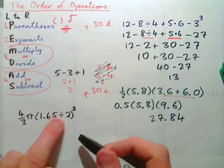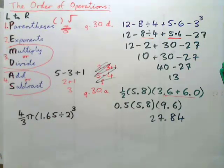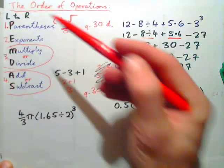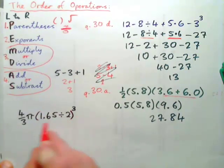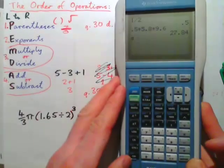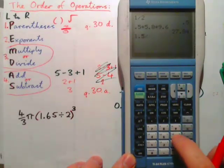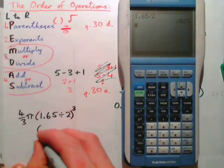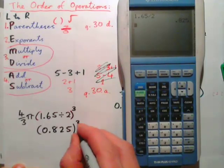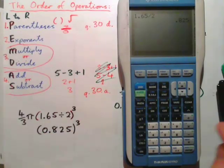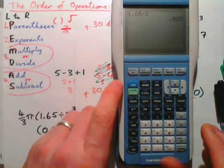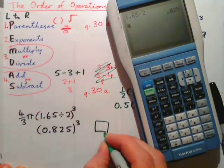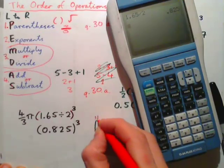How about this one: 4 over 3 times pi times a quantity all to the power of 3. We need to use PEMDAS to simplify this expression. First, we do parentheses — calculate what's inside the parentheses first: 1.65 divided by 2, which gives 0.825. Pi is a universal constant. On the calculator, look for the key with a little pi symbol — press the second button and then that key to get pi, which gives 3.14159 and so on.